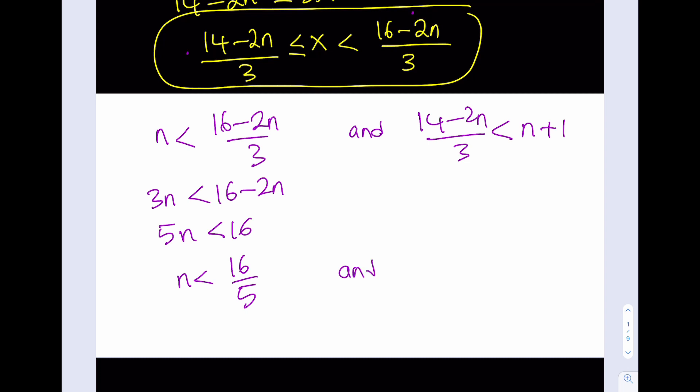And on the other side, I can multiply by 3, 3n plus 3. Then what I can do is I can actually go ahead and add 2n and subtract. So this is what I'm going to be getting from here. 5n is greater than 11. And n is greater than 11 over 5. Now,